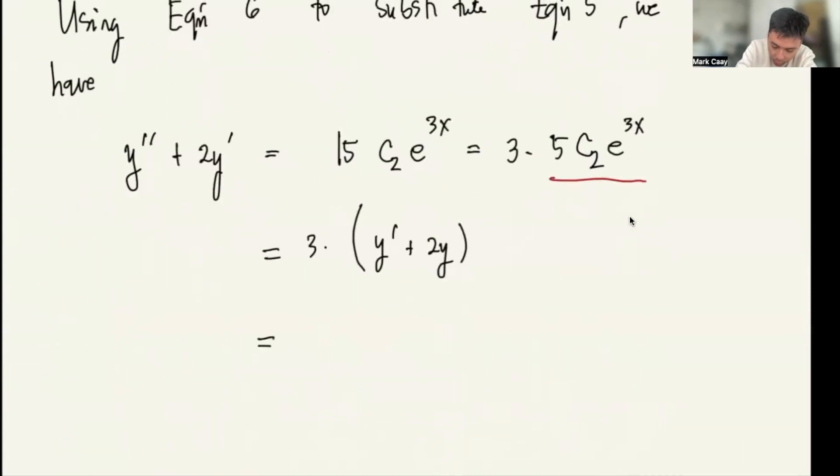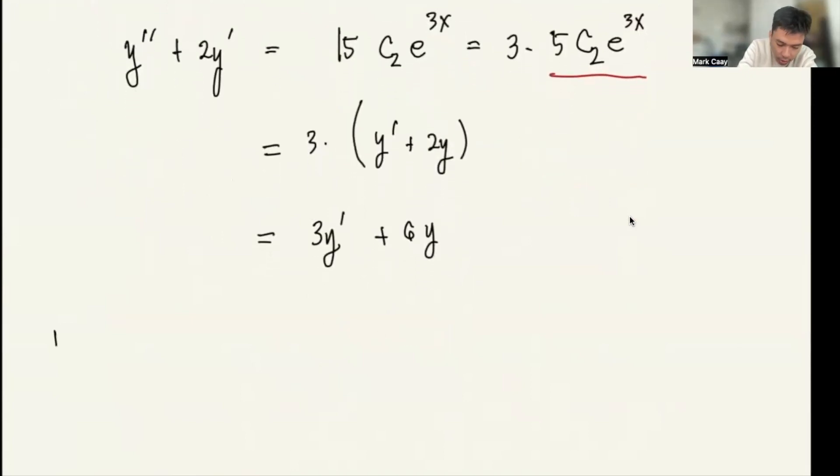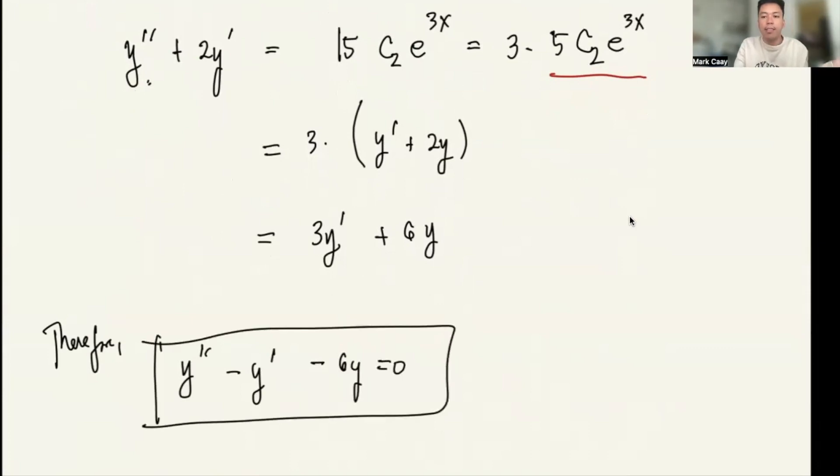So if we simplify that, we have 3y prime plus 6y. Therefore, y double prime plus 2y prime minus 3y prime minus 6y equals 0, which gives us y double prime minus y prime minus 6y equals 0. So this is now the final answer. That's it. If you have any questions or clarifications, please let me know.